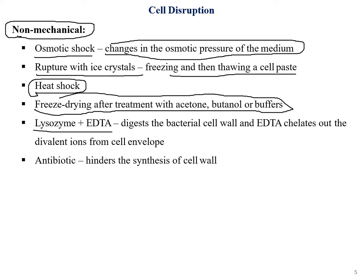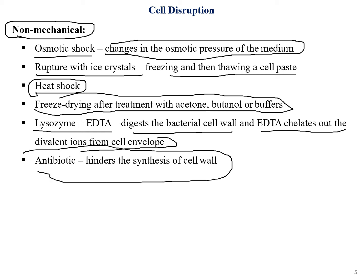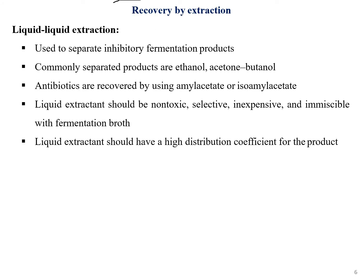Another method is lysozyme plus EDTA reaction, which digests the bacterial cell wall. EDTA chelates out the divalent ions from the cell envelope, leading to breakage of the cell wall and thus the cell. Antibiotics can also be used to hinder the synthesis of the cell wall. This concludes the non-mechanical part of cell disruption.